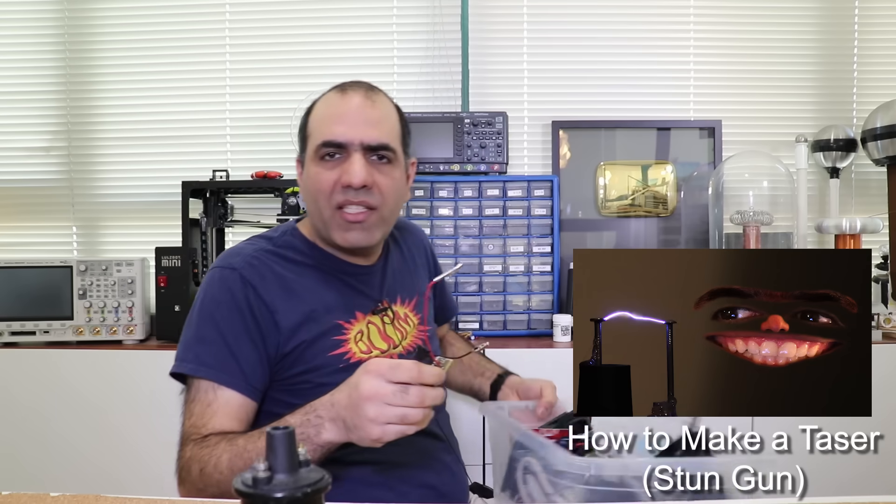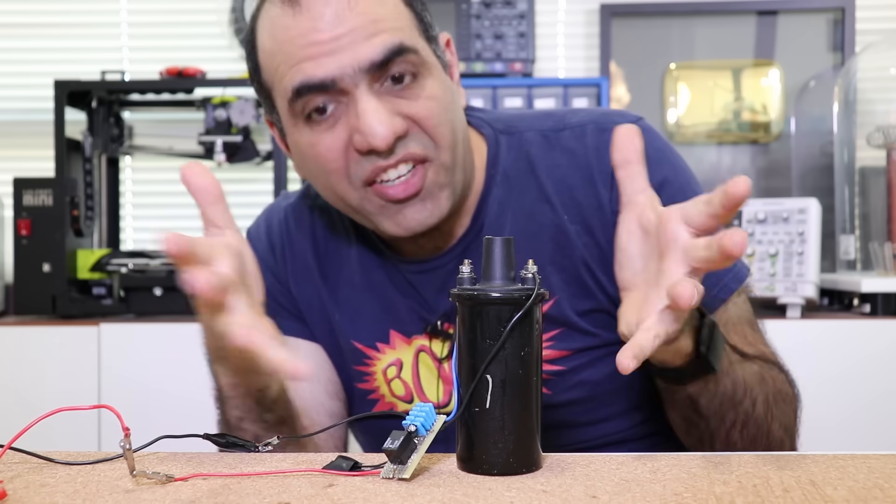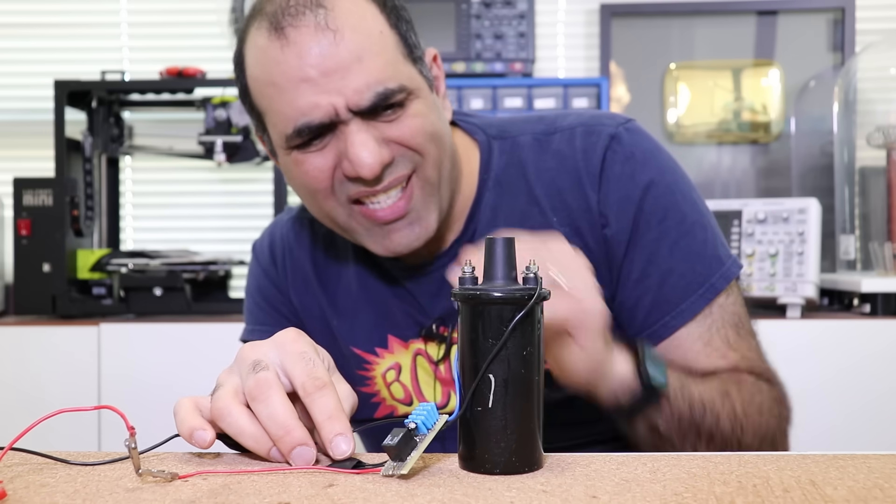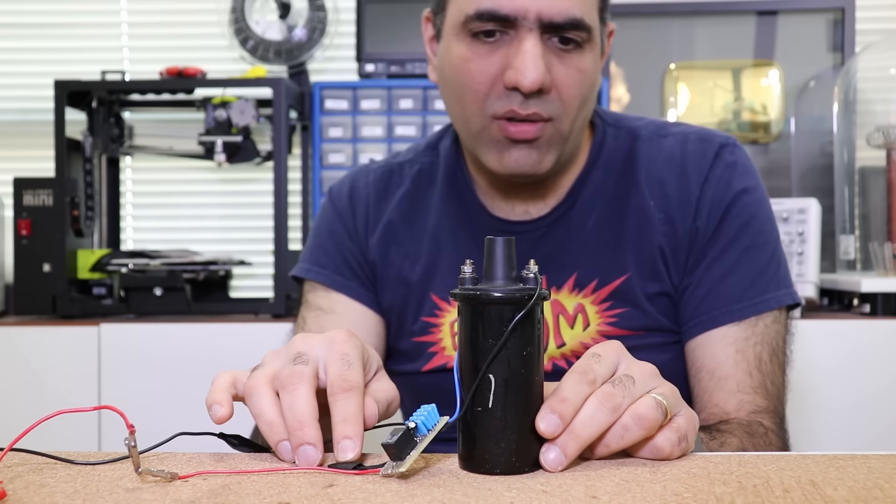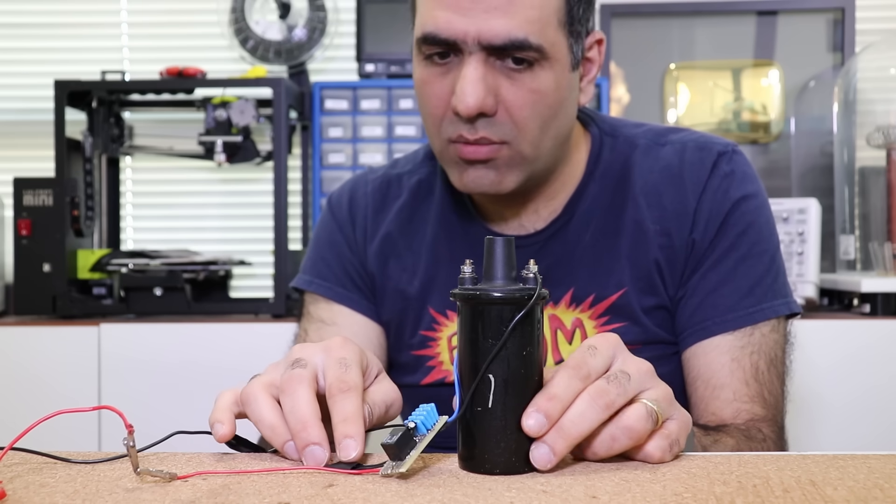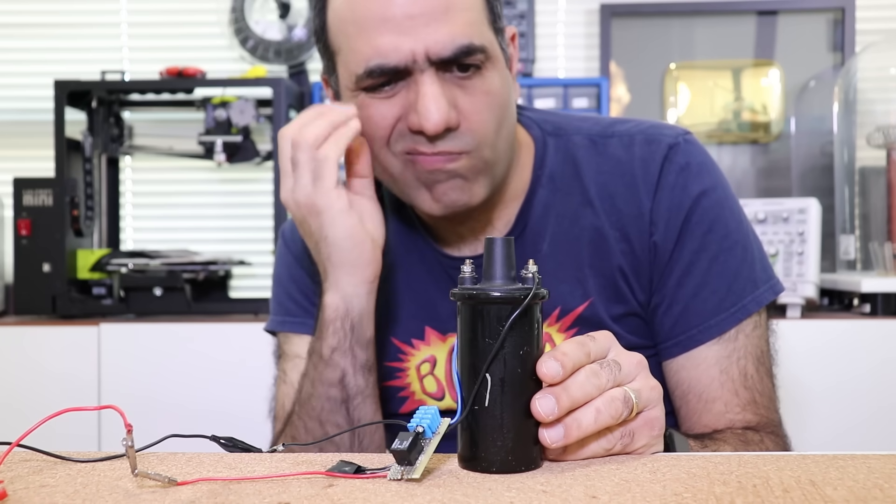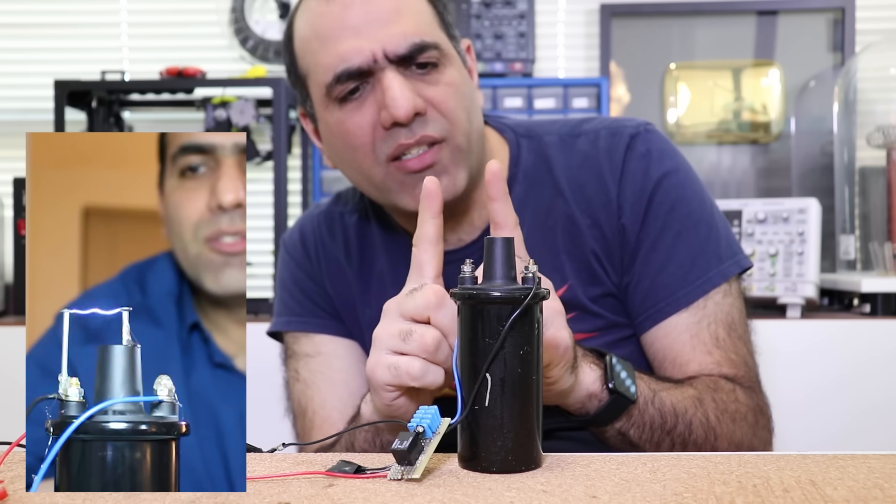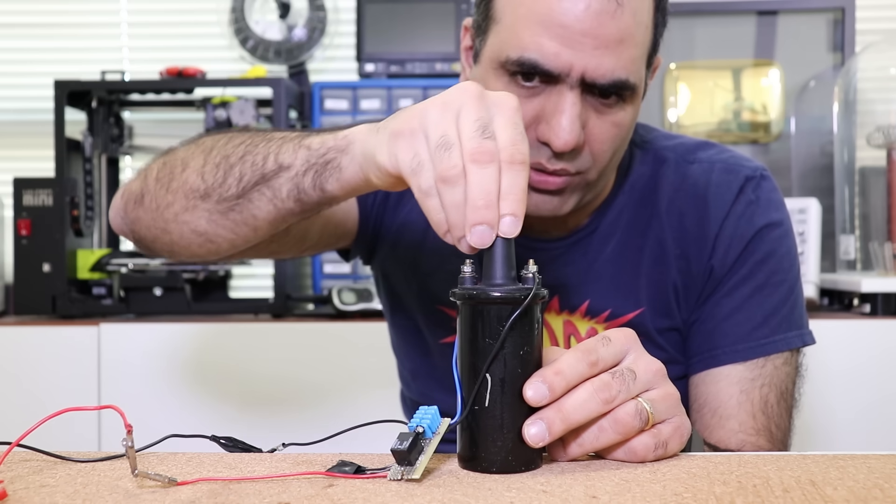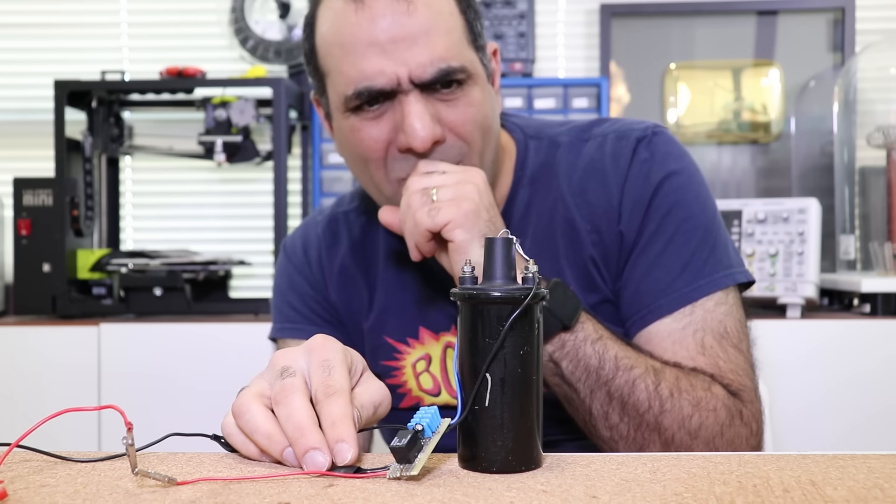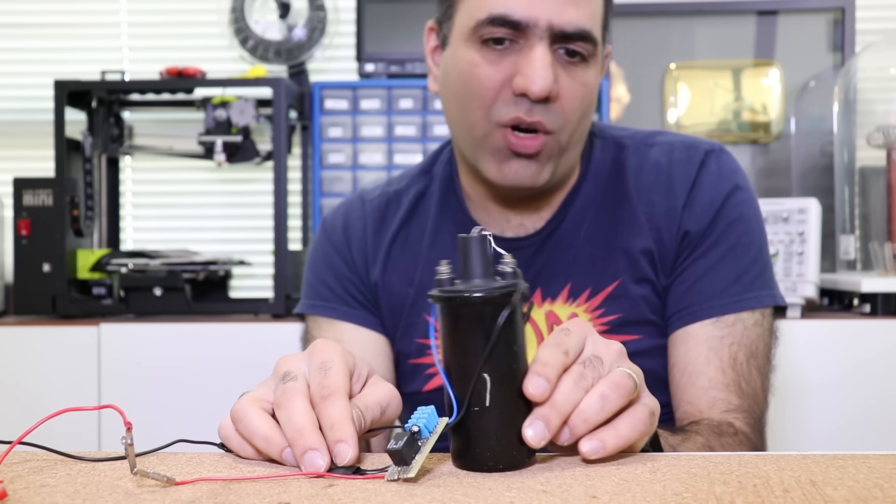I made a taser a while back and I'm gonna use it to create the arcs I need. Let's see if it works after all these years. There used to be two nails in there and the gap was shorter. If I put a piece of wire there to make the gap shorter it starts going. There it is, now it works.